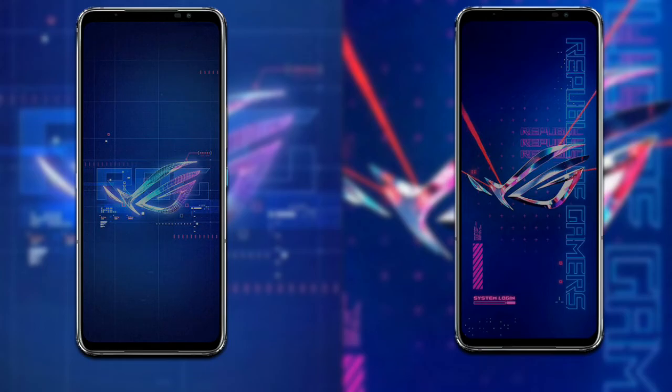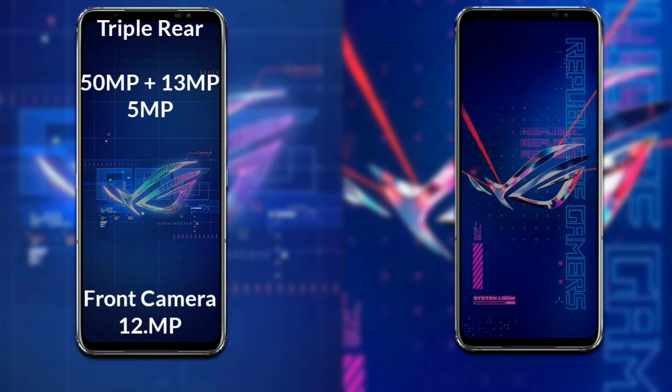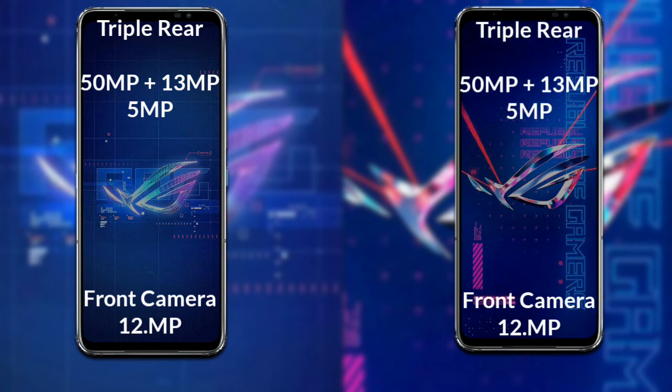Now let's compare the cameras. The ROG Phone 6 has a rear triple camera setup: the primary camera is 50MP, the secondary sensor is 13MP, and the third sensor is a macro lens. Its front camera is 12MP. The ROG Phone 6 Pro also has a rear triple camera setup: the primary camera is 50MP and the secondary sensor is 13MP.